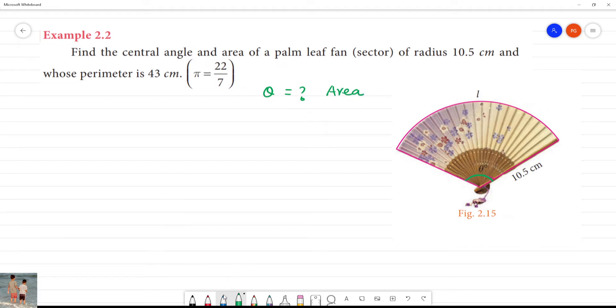Radius is equal to 10.5 cm. Perimeter is equal to 43 cm. 22 by 7 value is used for pi.